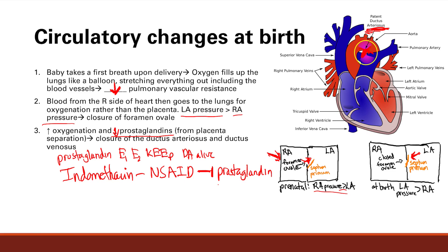To summarize, there are three main circulatory changes at birth. First, you take a deep breath, getting decreased pulmonary vascular resistance. This leads to closure of the foramen ovale by changing the pressure balance between the left and right atrium. Finally, because of decreased prostaglandins and increased oxygenation, you get closure of the ductus arteriosus and ductus venosus. All three fetal shunts have now closed — a beautiful transition from fetal to non-fetal life. Next, we're going to talk about congenital heart diseases.